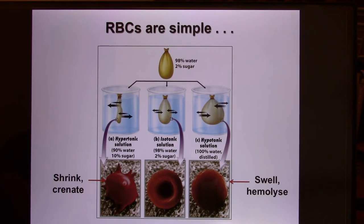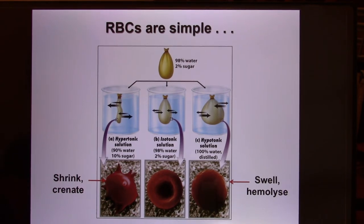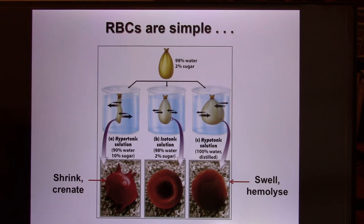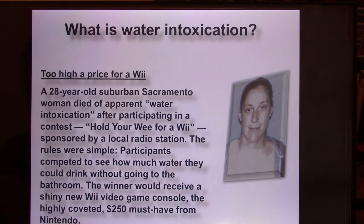In animal studies, breathing 100% oxygen for 12 to 24 hours starts damaging the alveolar cells in the lungs — too much oxidation. So everything needs to be just right, not too much and not too little. This brings us to our next topic: homeostasis — a stable internal environment. Your body's normal concentration is about 300 milliosmoles, which is the correct concentration.